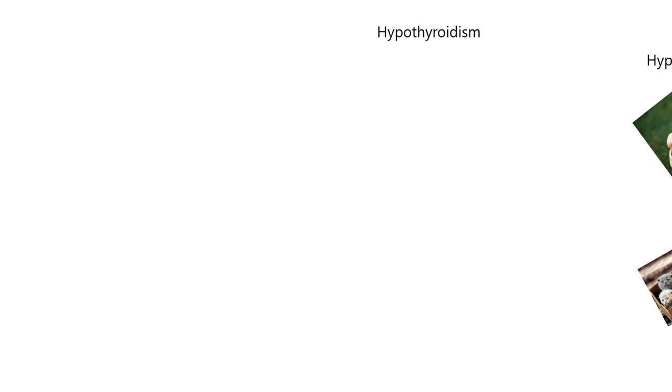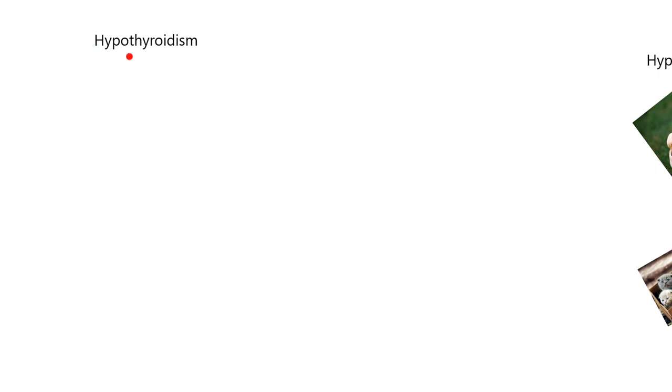Now we're going to talk about two very common disorders of the thyroid gland. One is hypothyroidism — hypo meaning a low level of thyroid activity. The other is hyperthyroidism — hyper meaning above-normal thyroid activity.